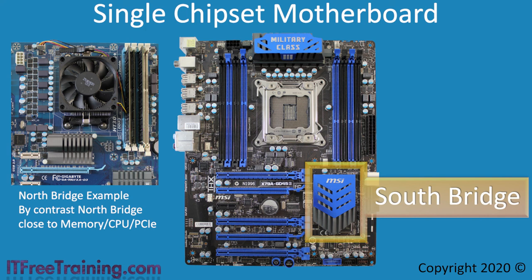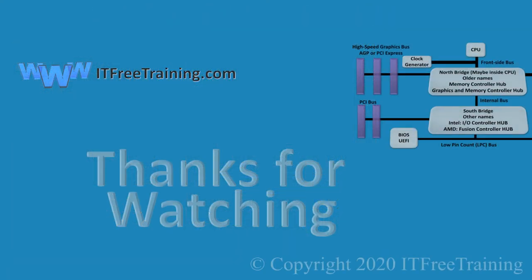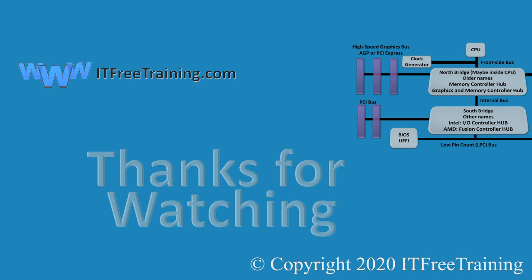This is because some CPUs will perform all the functions of a traditional North Bridge, and if that is the case, there will be no North Bridge chip on the computer. This video has looked at the basic components that make a motherboard work. I hope you have found this helpful. In later videos, I will have a closer look at the chips on the motherboard and what they do. Until those videos, I would like to thank you for watching.